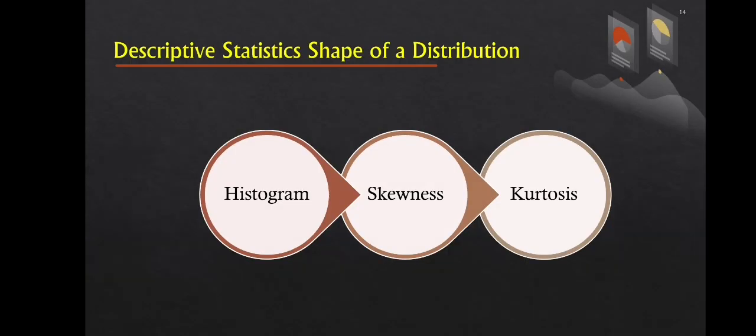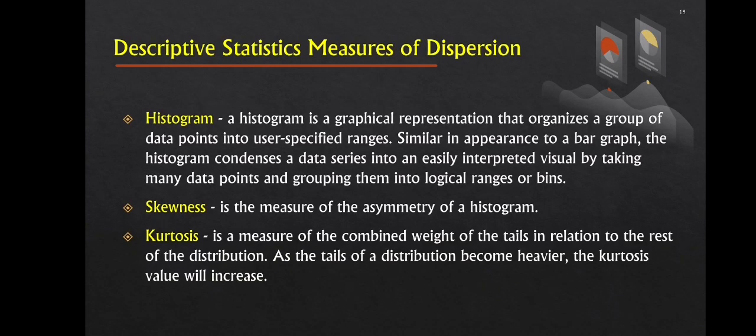Next, we have the descriptive statistics shape of distribution. Shape of distribution includes histogram, skewness, and kurtosis. Histogram is a graphical representation that divides a set of data points into user-defined ranges. The histogram, which resembles a bar graph in appearance, condenses a data series into an easy interpreted visual by taking many data points and grouping them into logical ranges or bins. Next is skewness, which is the measure of the asymmetry of a histogram, and kurtosis, which is a measure of the tail's combined weight in relation to the rest of the distribution. The kurtosis value increases as the tail of the distribution becomes heavier.